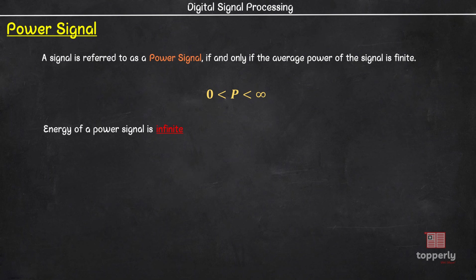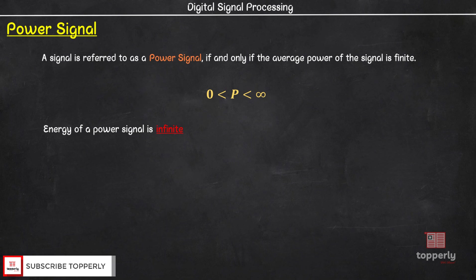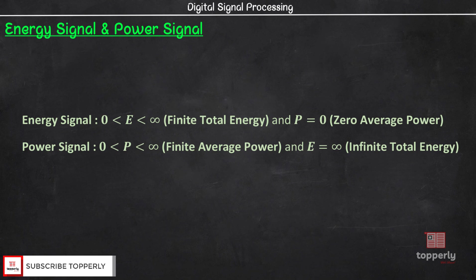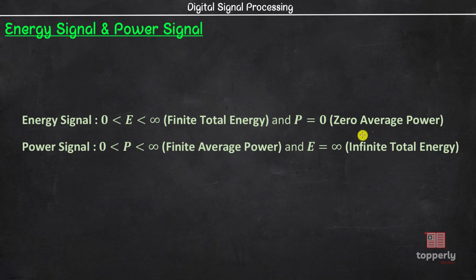Also, the energy of a power signal is infinite as it is not limited in length. The power signal always exists from beginning to end and it never ends. For example, a sine wave of infinite length is a power signal. To summarize: an energy signal has finite total energy and zero average power, while a power signal has finite average power and infinite total energy.